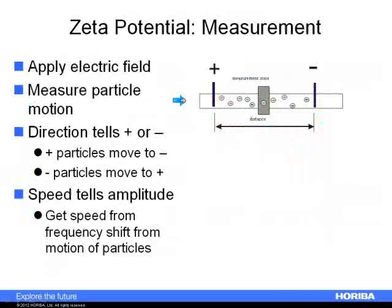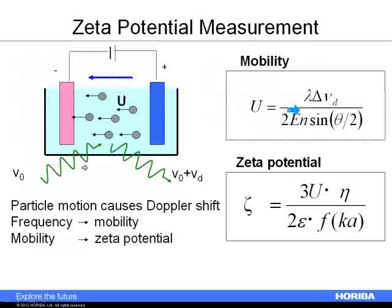To measure zeta potential, we place the sample in a capillary cell and apply an electric field. We measure the particle motion — the direction tells us if it's positively or negatively charged, and the speed gives us the magnitude of the charge. We look at a frequency shift due to the motion of the particle — essentially a Doppler shift. From this frequency shift and the instrument design, we calculate the electrophoretic mobility, and from that we calculate the zeta potential.